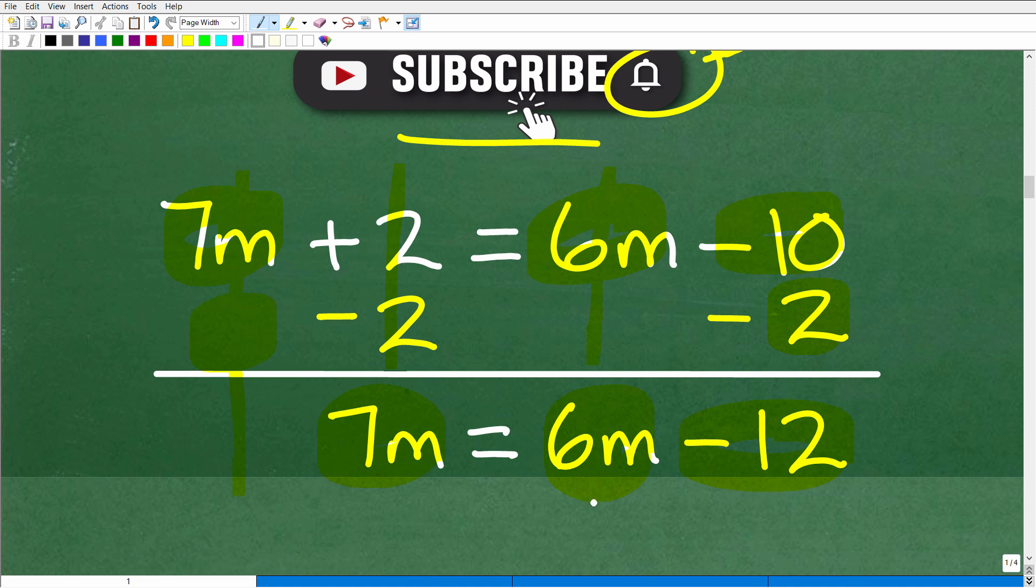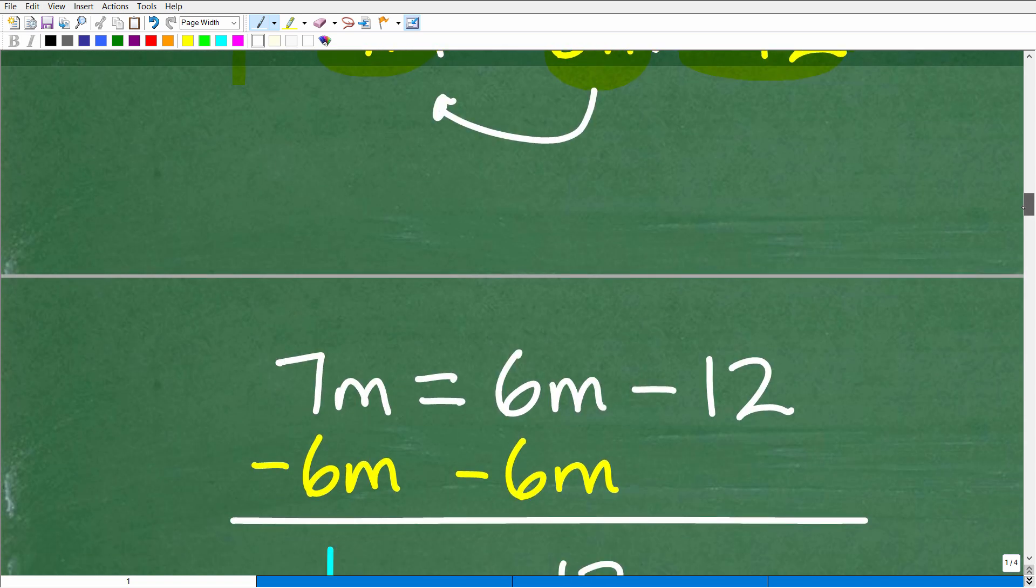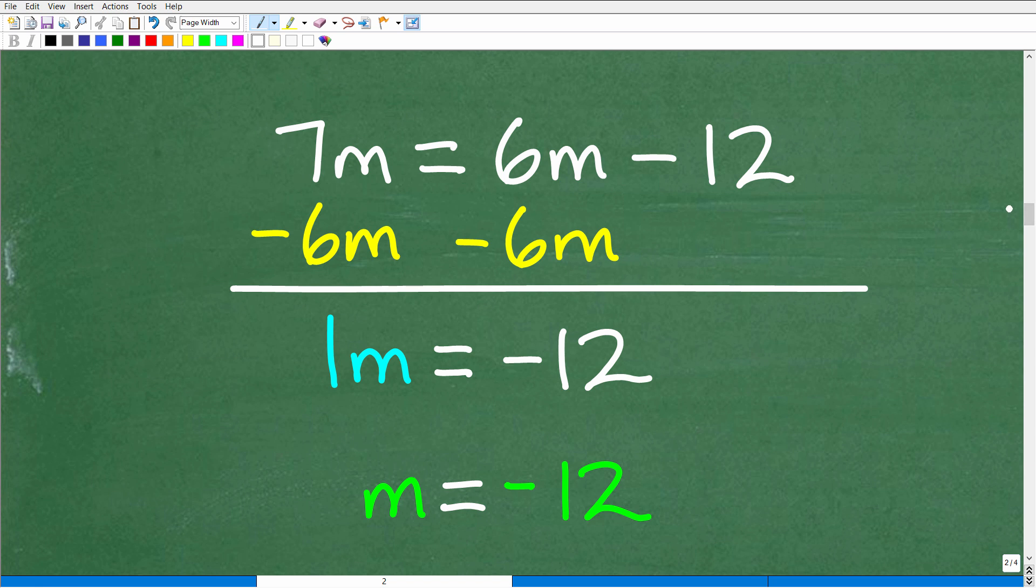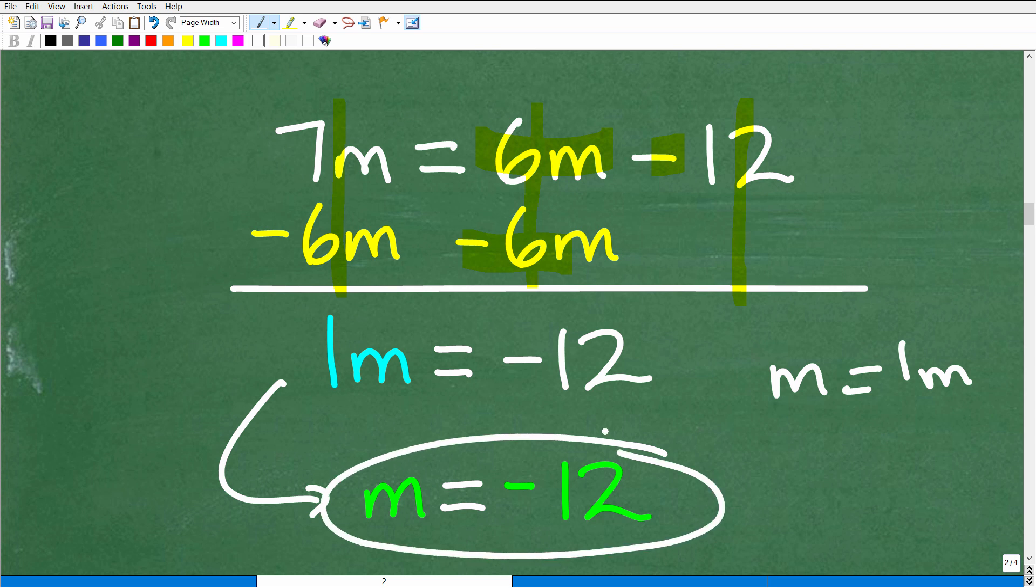So now we need to move this 6m over to the other side of the equation. So we're going to follow the same kind of golden rule of algebra. Whatever we do to one side of the equation, as long as we do it to the other side, we're okay. So we want to get rid of this 6m on the right-hand side. So we'll subtract 6m from both sides of the equation. And then we're going to add down in a column manner. So 7m minus 6m is 1m. 6m plus a negative 6m is 0. So that goes away. We don't need to write anything there. And then negative 12 plus 0 is negative 12. Okay. So 1m is equal to negative 12. In algebra, we don't typically write a 1. This is what we call the coefficient, like 1m. It's just implied. If you have a variable like m, it's the same thing as 1m. So our solution is m is equal to negative 12.